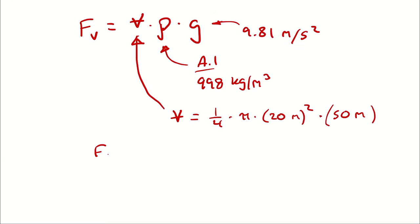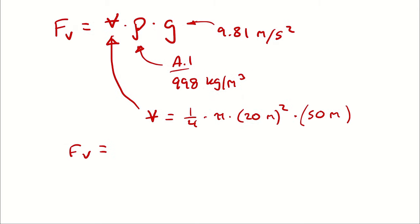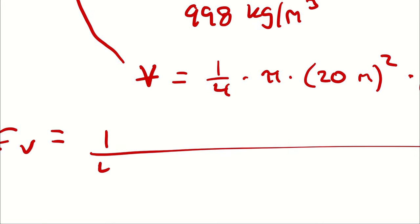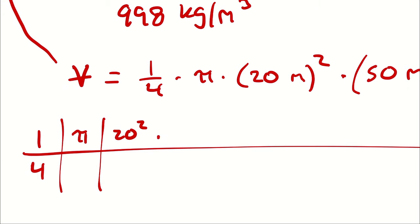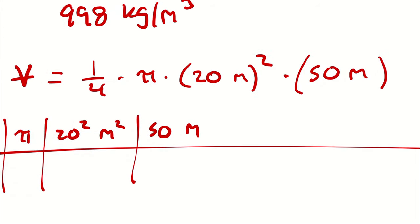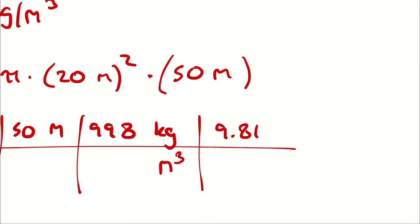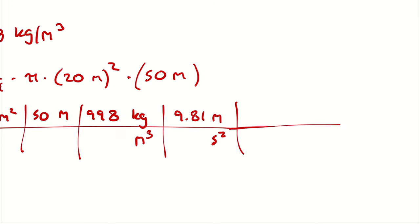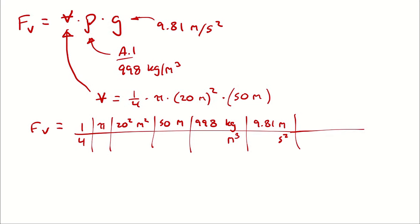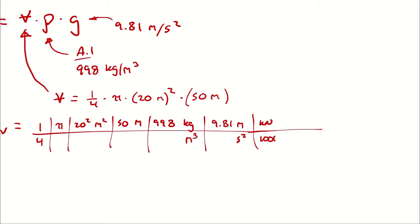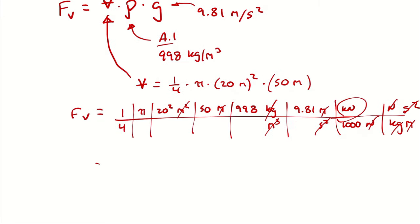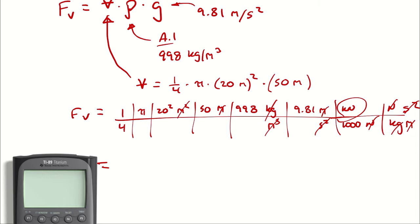That gives us our vertical component of the hydrostatic force. So: one quarter times pi times 20 squared meters squared times 50 meters, multiplied by 998 kilograms per cubic meter, multiplied by 9.81 meters per second squared. Since we are talking about a large volume of water, we want kilonewtons — a kilonewton is 1,000 newtons. Units cancel appropriately, leaving kilonewtons.